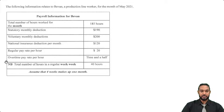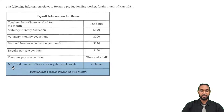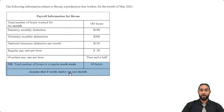Now they tell us some especially important information. The total number of hours in a regular work week is 40 hours, and assume that four weeks make up one month.